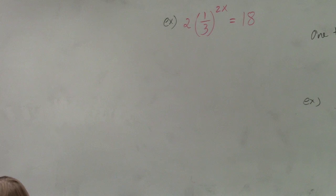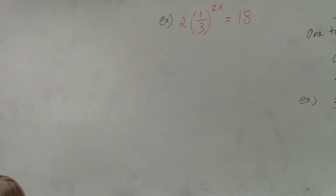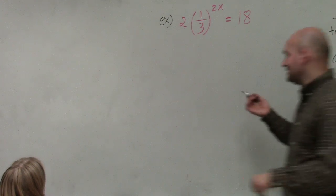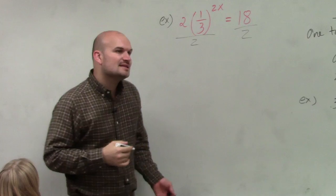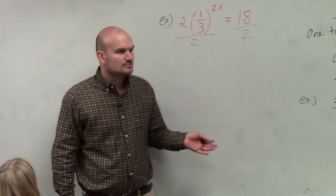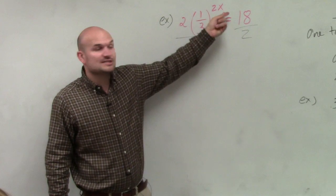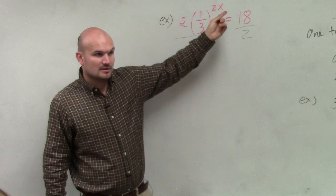So the first thing, before even wanting to use the one-to-one property, the first thing you always want to do is isolate the exponent. Right now, you can see that my exponent is 1/3 raised to the 2x. That's the exponent.